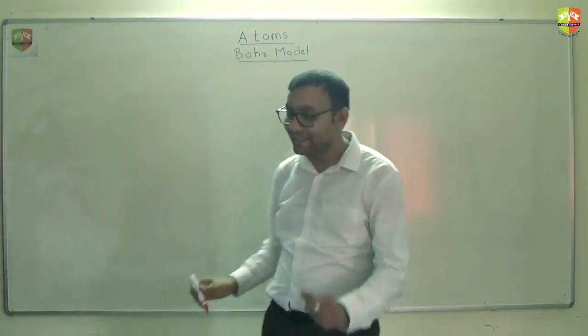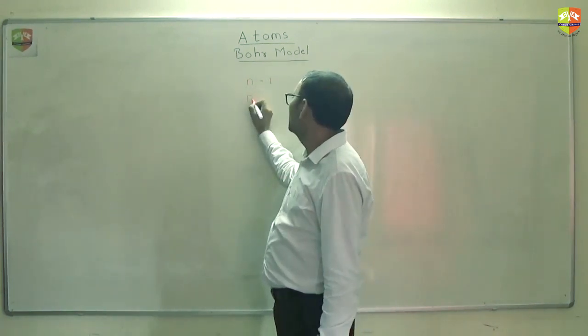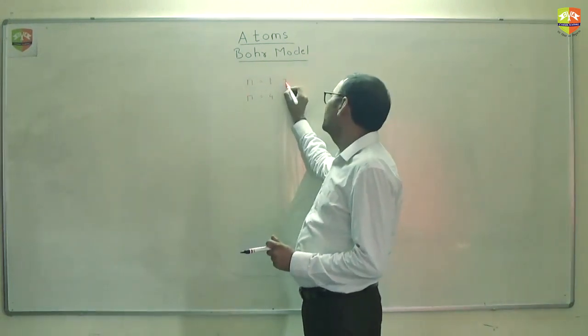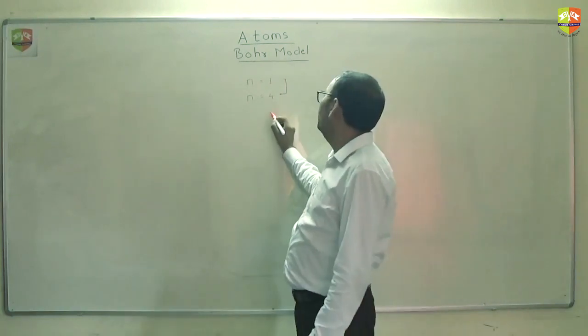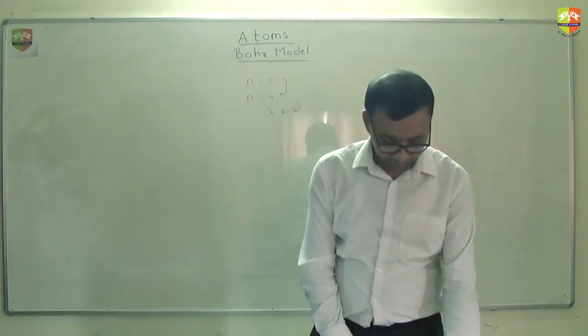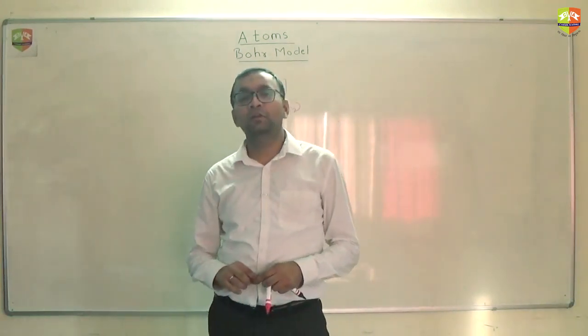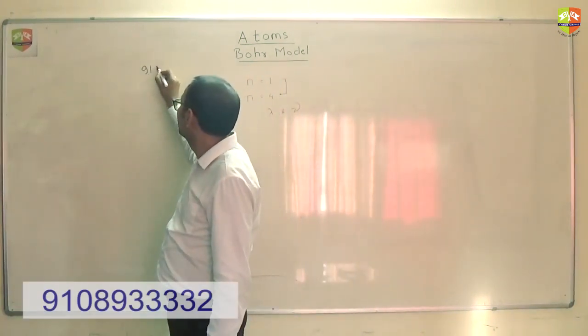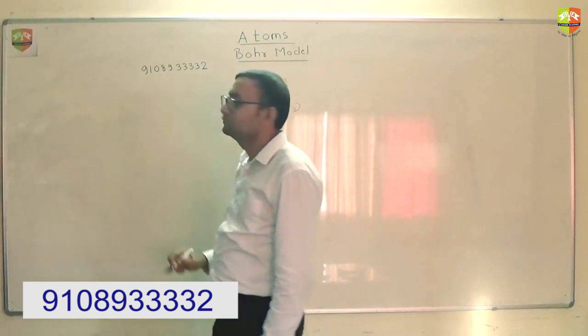Next question. Hydrogen atom which is initially at the ground state as in at n equal to 1. It jumps to n equal to 4. So find out, see why it will jump? Because it absorbs photon. You have to find out wavelength and frequency of photon. You can do it. Those who are watching it online, I am Dheeraj from Centrum Academy. We are located in Bangalore. And if you want to get in touch with us, this is the phone number.